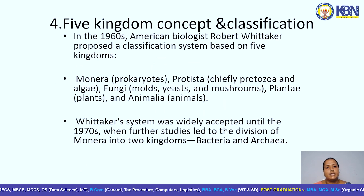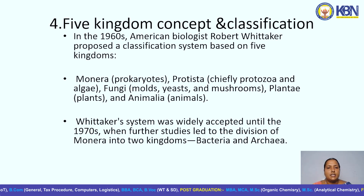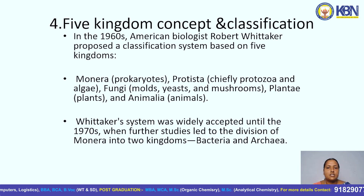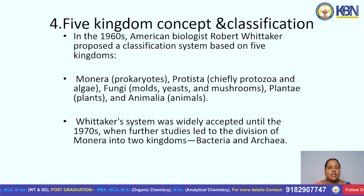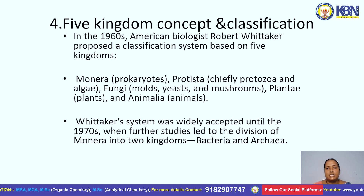Another topic is the five kingdom concept and classification. In the 1960s, American biologist Robert Whittaker proposed a classification system based on five kingdoms. The five kingdoms are: Monera, prokaryotes; Protista, chiefly protozoans and algae.